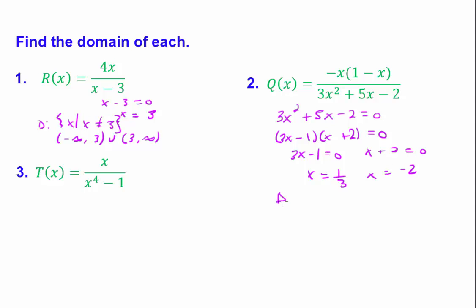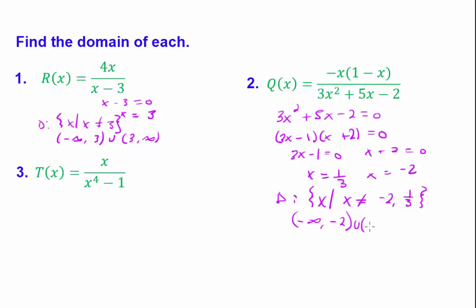In set builder notation, the domain is x such that x cannot equal negative 2 and positive 1 third. In interval notation, it's negative infinity to negative 2, union negative 2 to 1 third, union 1 third to positive infinity.